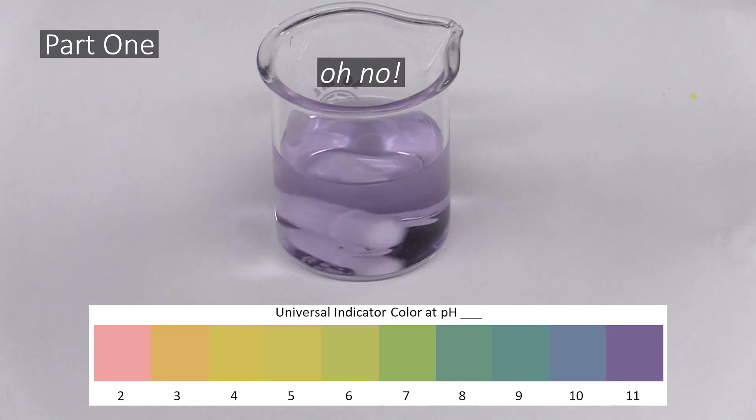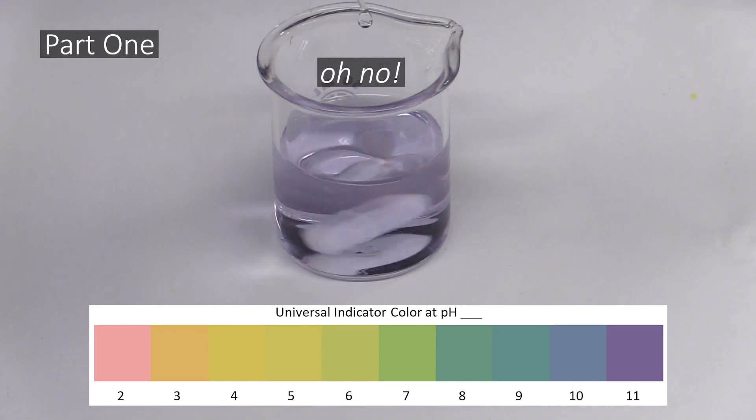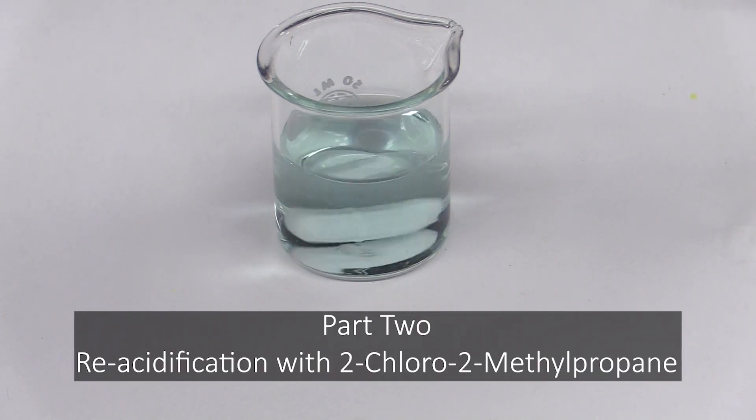If you overshoot, don't panic, just add a few drops of acid to bring the pH down again. In magic color station part 2, you will take the solution you made in the first part and use a special reaction involving 2-chloro-2-methylpropane to re-acidify it.